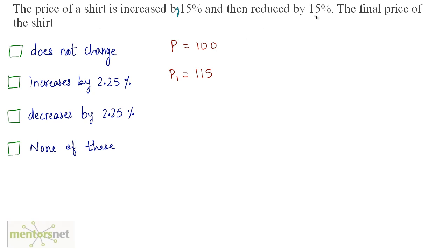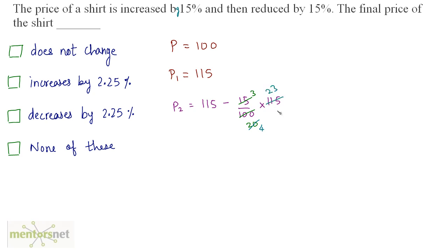The increased price P1 is reduced by 15%, not the base price. So P2 will be equal to 115 minus 15% of P1, which is 15 upon 100 times 115. Simplifying by dividing by 5, we get 115 minus 69 by 4, and if you solve this you will get 97.75.